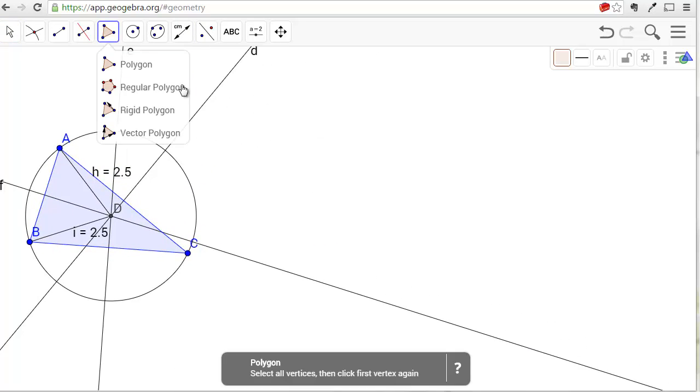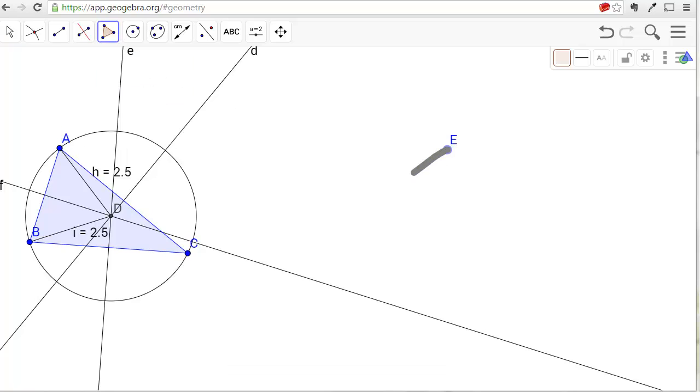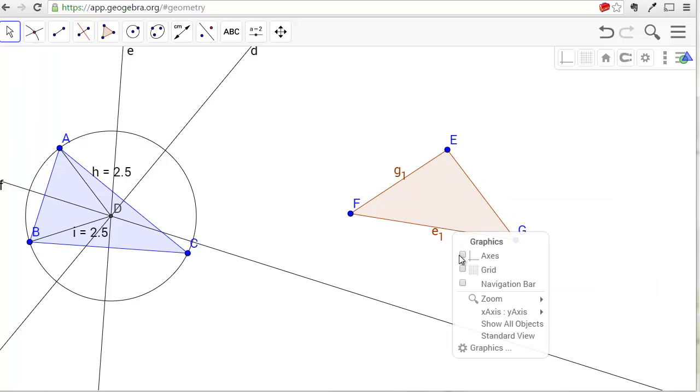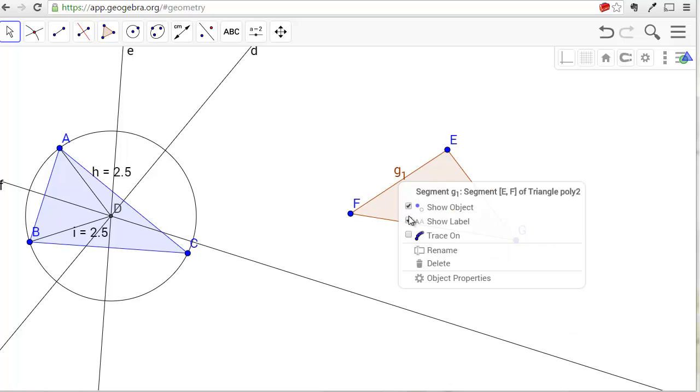So we start with a new triangle. I'm going to remove a few labels here, and let's find the angle bisector.